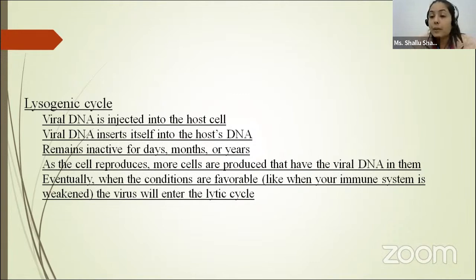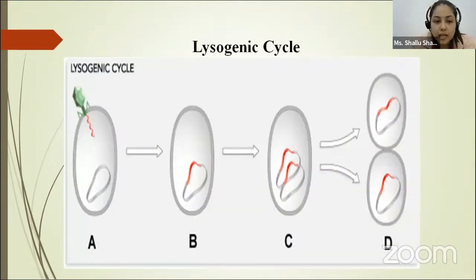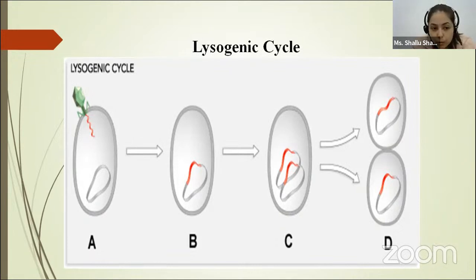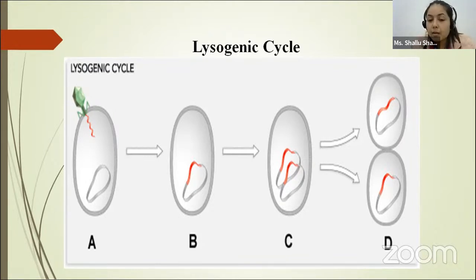You can see in the cycle how the virus attaches to the host cell, penetrates, releases its genetic material to the host cell, and the parent cell converts into the daughter cell.